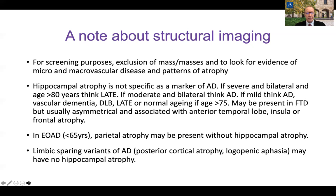Hippocampal atrophy is the classical finding associated with Alzheimer's disease but is not specific to it. If it's severe, bilateral, and the patient is over the age of 80, seriously consider LATE rather than Alzheimer's disease. If moderate and bilateral, think Alzheimer's disease. If mild, it could be early Alzheimer's, vascular dementia, dementia with Lewy bodies, or even normal aging — particularly in those over 75. Hippocampal atrophy in frontotemporal dementia is usually asymmetrical and associated with anterior temporal lobe or frontal and insular atrophy.